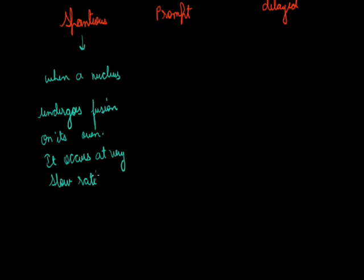Prompt fission is a fission in which a nucleus is split into smaller nuclei instantaneously. Prompt means which happens immediately — as soon as we give a neutron, its reaction comes immediately. Whenever a neutron hits the particle, at that same moment without any time lag it undergoes the changes. About 99% of uranium-235 fission is caused by this type of fission.